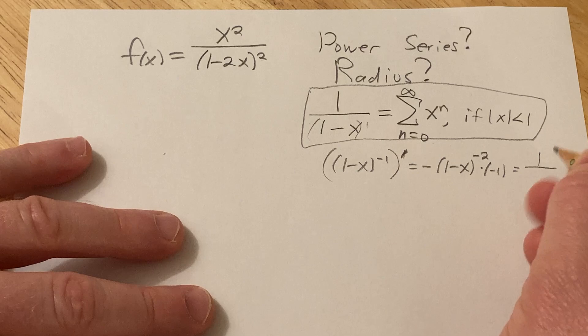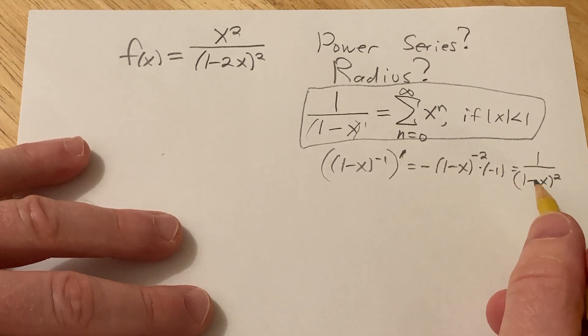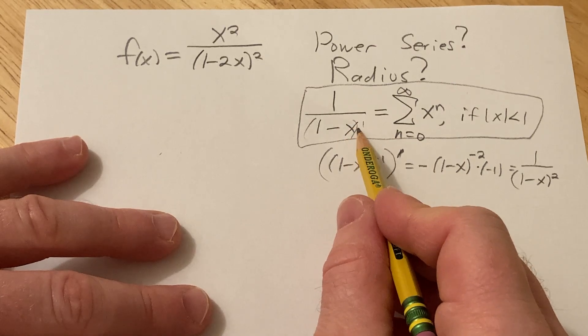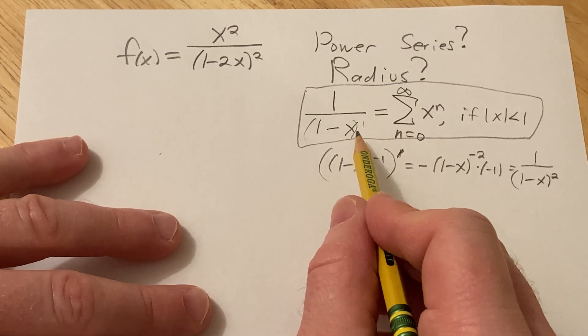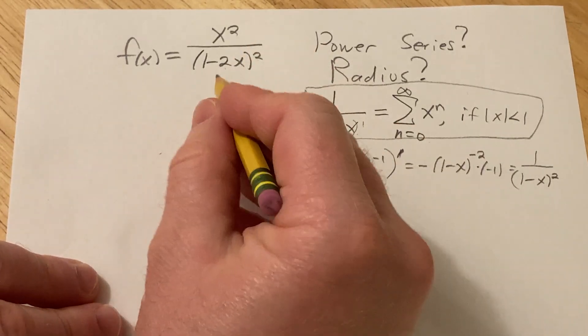And so you get 1 over 1 minus x quantity squared. So you do get a 2 when you start taking derivatives of this. So instead of differentiating this, we need to have something with the 2 here. So watch this.